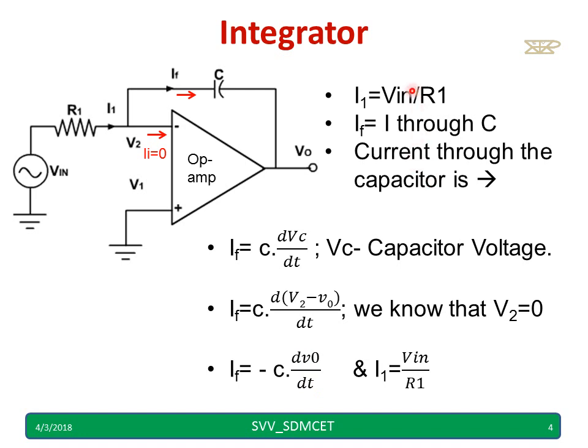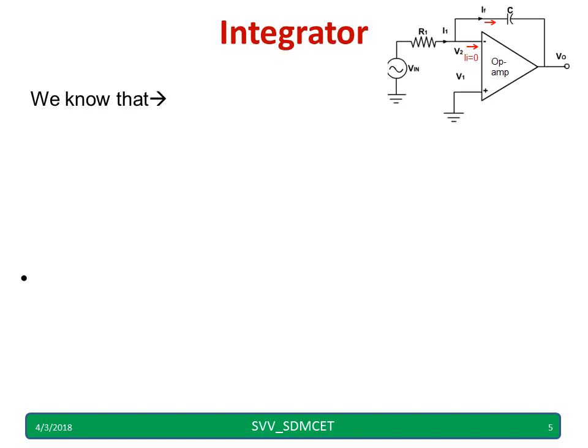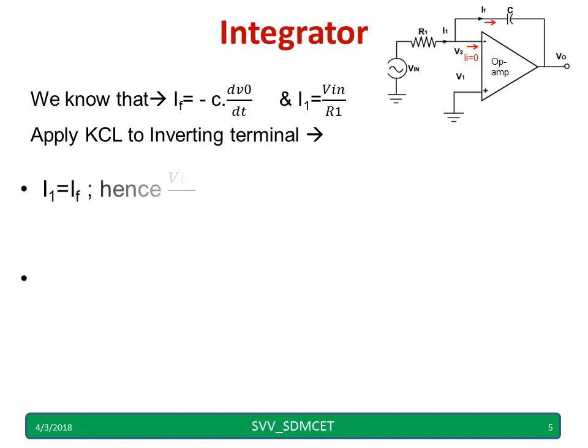And I1 is already discussed in the previous slide. It is VIN by R1. We know that IF is given by as well as I1 is given by these two equations. And applying KCL to the inverting terminal at this point we can write IF equal to I1.